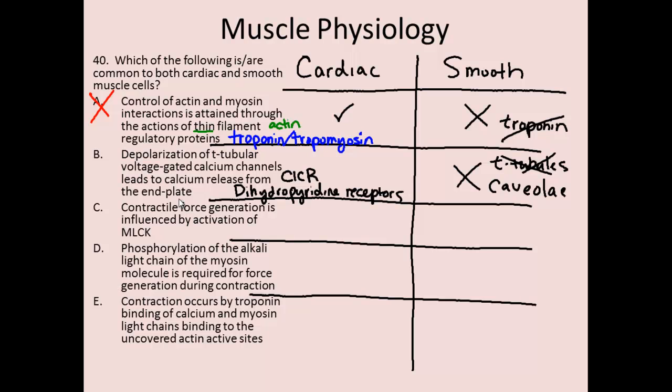The depolarization of t-tubular voltage-gated calcium channels does lead to calcium release, but the question is where that calcium comes from. With calcium-induced calcium release, it's not the end plate releasing the calcium — it is the junctional sarcoplasmic reticulum. So while the first part of the statement was true, this is essentially a nonsense answer. We should see the calcium coming from the sarcoplasmic reticulum, not the end plate. Response B is not true of smooth or cardiac.